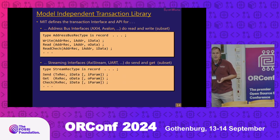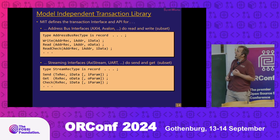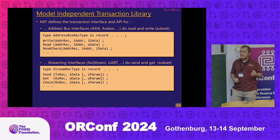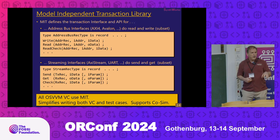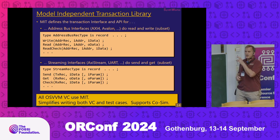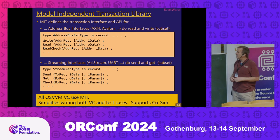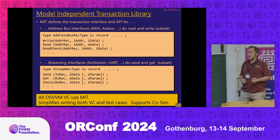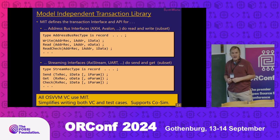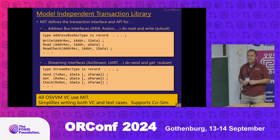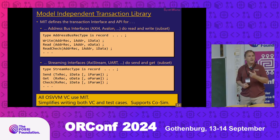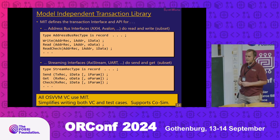We did the same thing for streaming-sort of interfaces. We support AXI Stream, UART, and they do things like send and get. We also support burst operations. All of the verification components in the OSVVM library use this model-independent transaction library. It simplifies writing verification components, there are fewer steps to do, it simplifies writing test cases, and if you use it yourself we also support the C-based cosim. And if we develop something for Python, it would also leverage this to connect to any of our verification components.